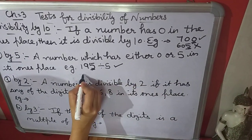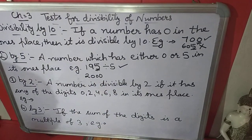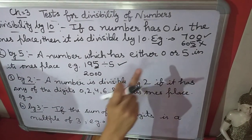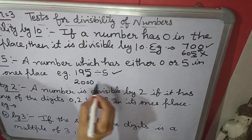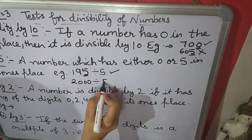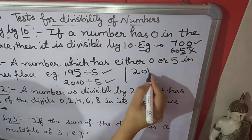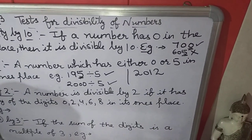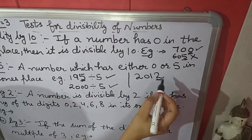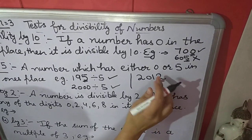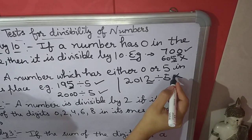Next example: 2,000. Check if it is divisible by 5. The 1's place is 0, so it is divisible by 5 also according to the rule. Next, 2012 — you have to find if it is divisible by 5 or not. The last digit is 2. Since 2 is not 0 or 5, this is not divisible by 5.